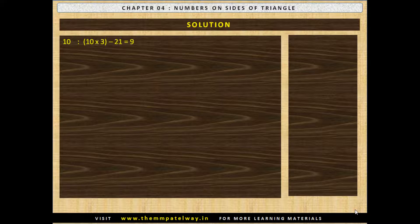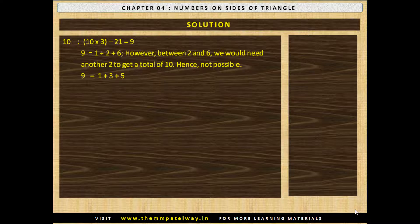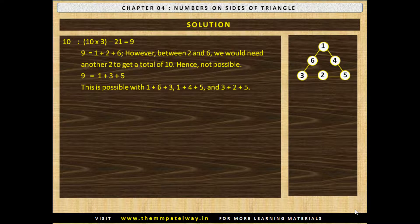Now let us see the possibility of getting a sum of 10. 10×3 minus 21 gives us 9. 9 equals 1+2+6. However, between 2 and 6 we would need another 2 to get a total of 10, and therefore having 1, 2 and 6 in the vertex circle is not possible. A sum of 10 is not possible. Now we have another possibility of getting a sum of 9, which is 1+3+5. This is possible with combinations 1+6+3, 1+4+5 and 3+2+5. The solution is shown.